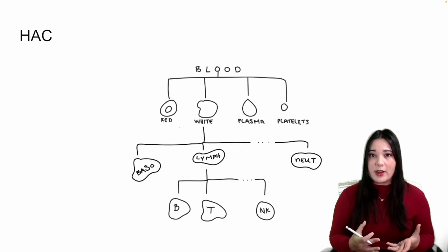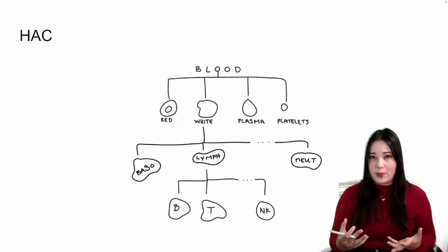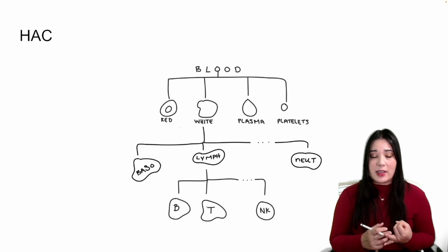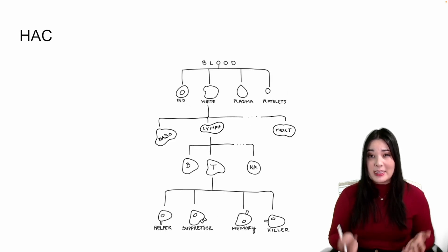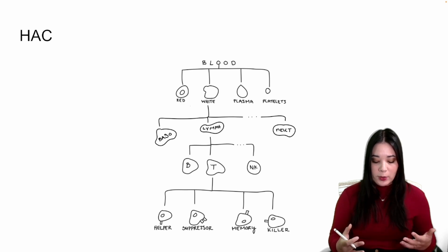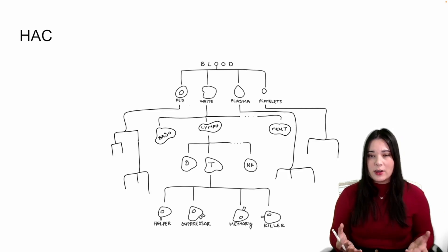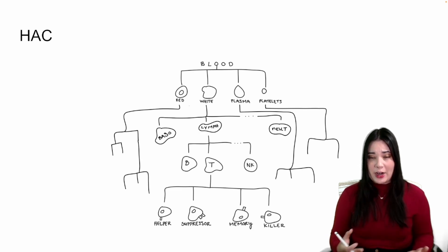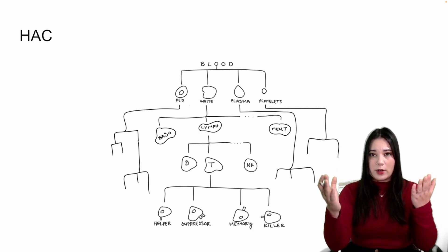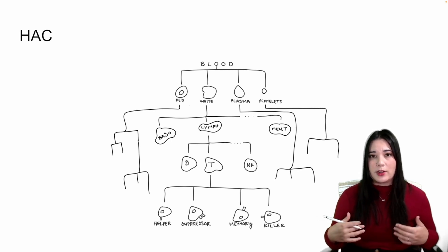But it doesn't stop there. If we look at lymphocytes, we can see that it is made up of other groups like B cells, T cells, and natural killer cells. And T cells are also made up of groups of cells like helper T cells, suppressor T cells, memory T cells, and killer T cells. Taken all together, you can see that these groups have a hierarchical relationship. The overarching groups are themselves made up of smaller subgroups, which are made up of smaller subgroups, and so on and so forth.